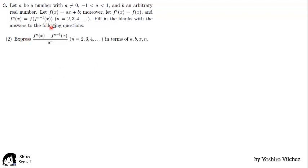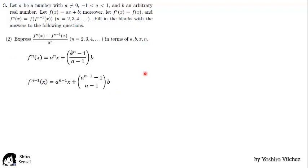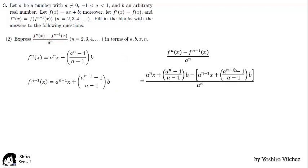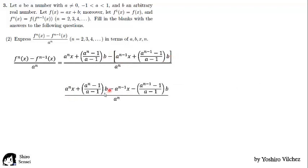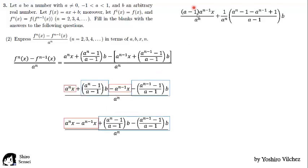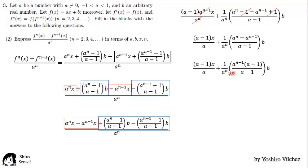Next question: express fn of x minus fn minus 1 of x, all over a to the n, for n equal to 2, 3, 4 and so on, in terms of a, b, x and n. From the previous problem we found fn of x, and then we find fn minus 1 of x. We replace, change signs for the minus, group linear terms and independent terms, separate the fractions, simplify a to the n minus 1, and cancel terms. Factorizing, we get finally: (a minus 1) times x plus b, all over a.